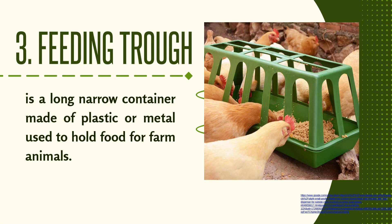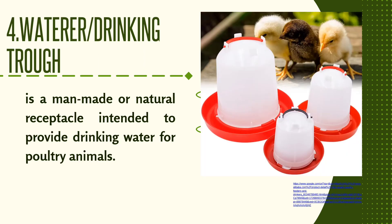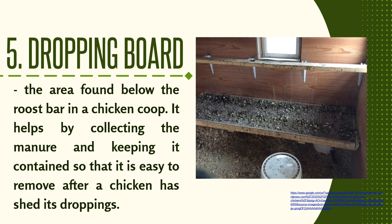The feeding trough is a long, narrow container made of plastic or metal used to hold food for farm animals. The water or drinking trough is a man-made or natural receptacle intended to provide drinking water for poultry animals. The dropping board is the area found below the roost bar in a chicken coop; it helps by collecting the manure and keeping it contained so that it is easy to remove after a chicken has shed its droppings.